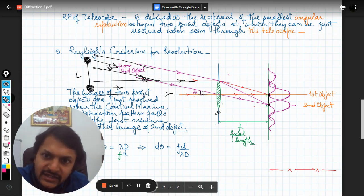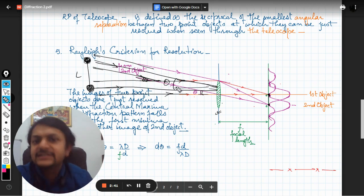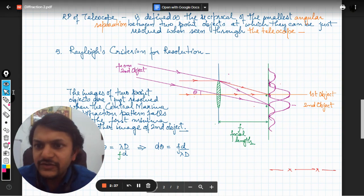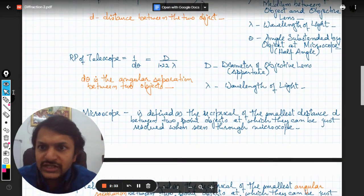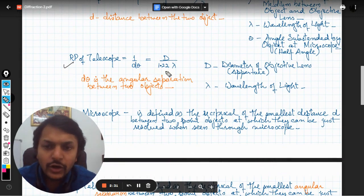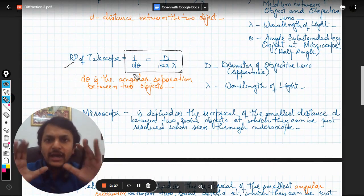For this particular thing, please try to remember this. What is the angle? This is the angle theta. Here, the angle is theta, the angle between these two rays. What is the formula that we are now going to use? We are going to use the resolving power of telescope. This is the formula that we are going to apply in this question.